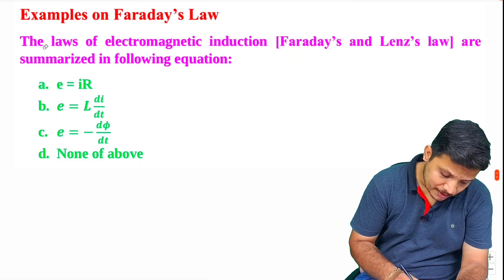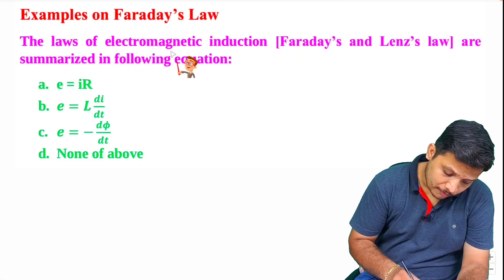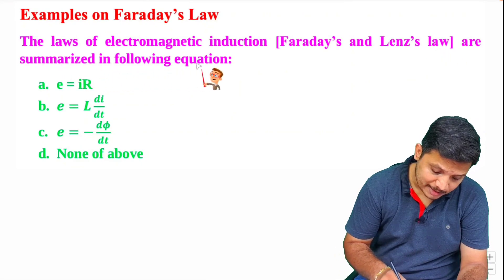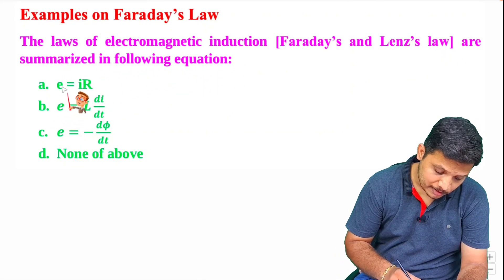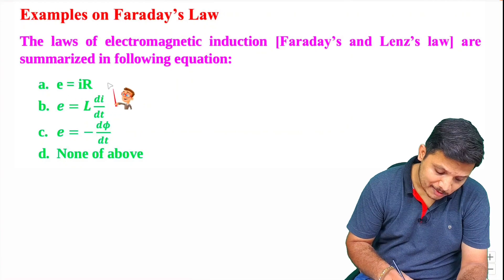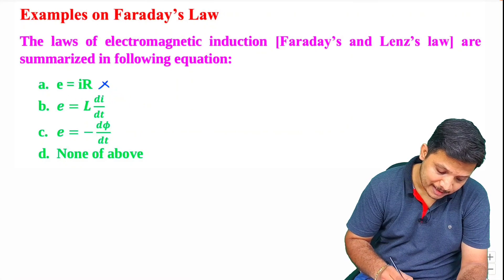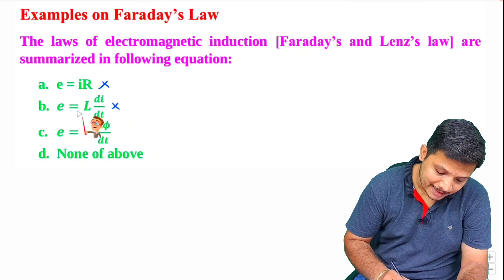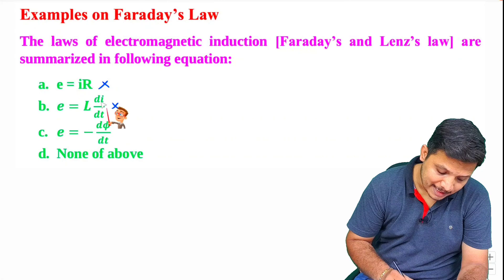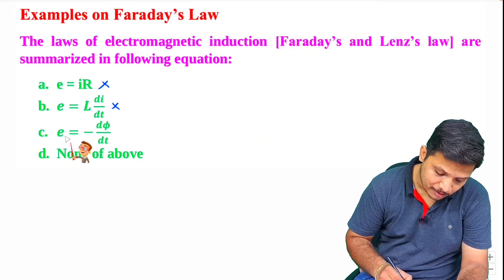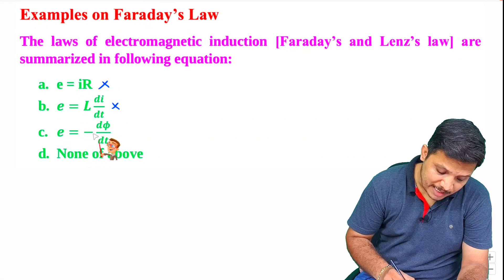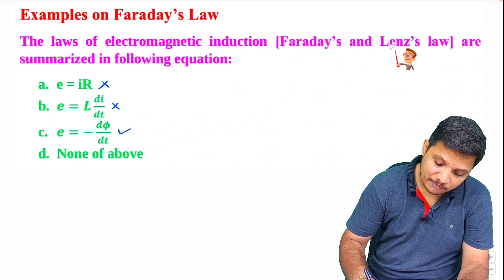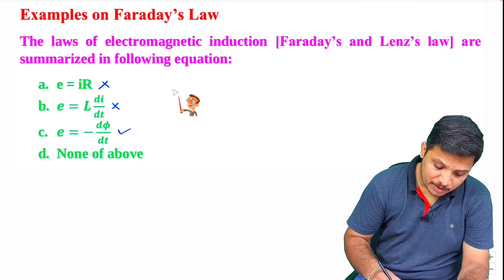The law of electromagnetic induction — Faraday's and Lenz's law — are summarized in the following equation. E equals IR is Ohm's law, not Faraday's law. E equals L di/dt states EMF across inductance — that is also not Faraday's law. EMF equals minus dΦ/dt — that is the summarized equation of Faraday's and Lenz's law that one should know.